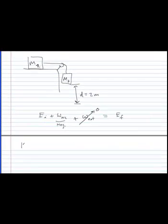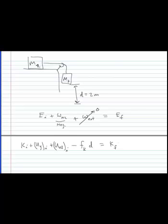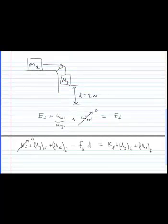And I'm just going to write out what I've got here. I've got K initial, plus UG initial, plus U elastic initial, those are all the energies we know about right now. I've got work done by friction, that's minus the force of friction times the distance. And this is going to equal K final, plus UG final, plus U elastic final. I just like to write everything out, and then think about what I've got, and put in some numbers there.